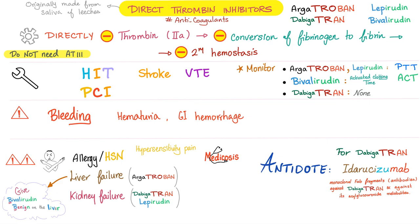Side effects of any anticoagulant include bleeding — hematuria, GI bleed, etc. Contraindications: don't give them to patients with allergy or hypersensitivity. Don't give argatroban if the patient has liver failure; go with bivalirudin instead, as bivalirudin is benign on the liver. If the patient has kidney failure, do not give dabigatran or lepirudin.